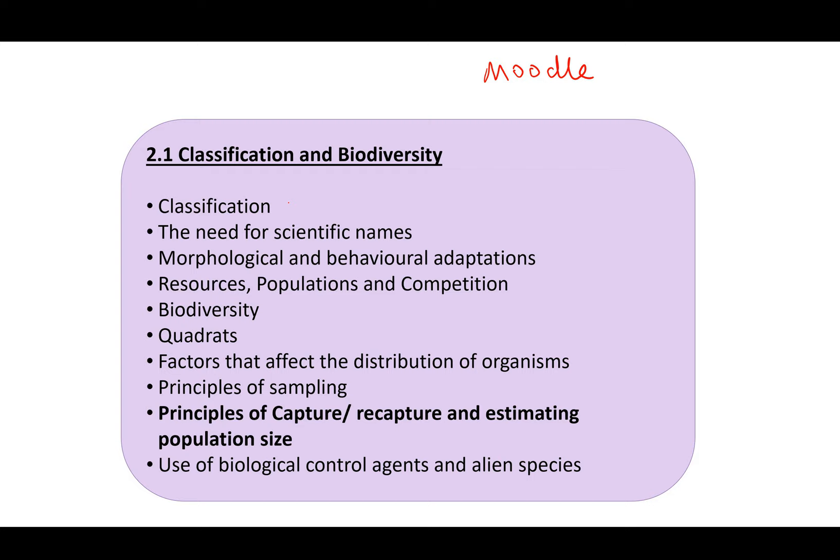In this topic we covered classification — why in science we have scientific names. Normally the genus and species name is written with the genus first with a capital letter, and the species name second, always with a lowercase letter. There are certain rules you need to be aware of. A common question in the GCSE exam is they might give you the genus and species name with an obvious mistake — the genus written with a lowercase letter — and they want you to identify what's wrong with it.